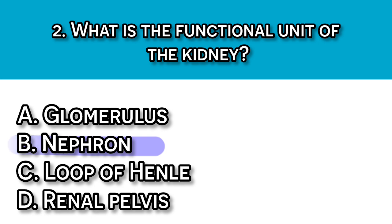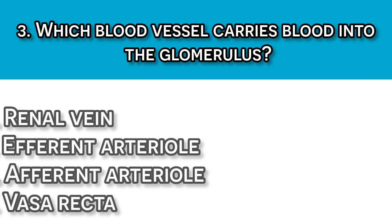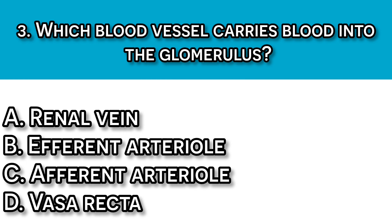Question number three: Which blood vessel carries blood into the glomerulus? A. Renal vein, B. Efferent arteriole, C. Afferent arteriole, and D. Vasa recta. Our answer here should be C, afferent arteriole, because the afferent arteriole is the only blood vessel that supplies the glomerulus for filtration.